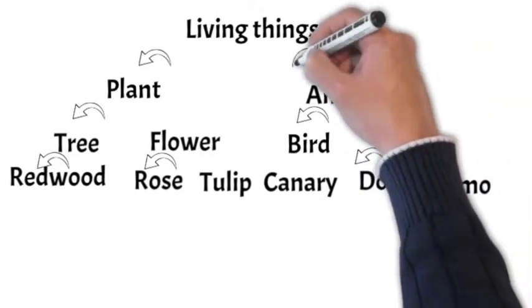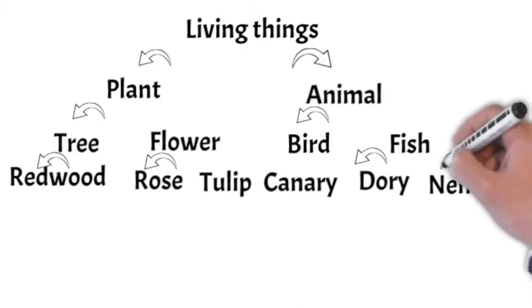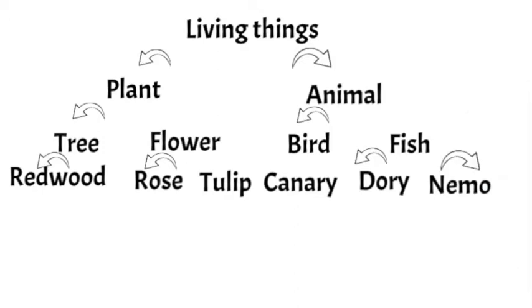They would ask if a canary was a bird. And because that's only one level away, they responded to that quicker, giving evidence that, in fact, we store information like this.